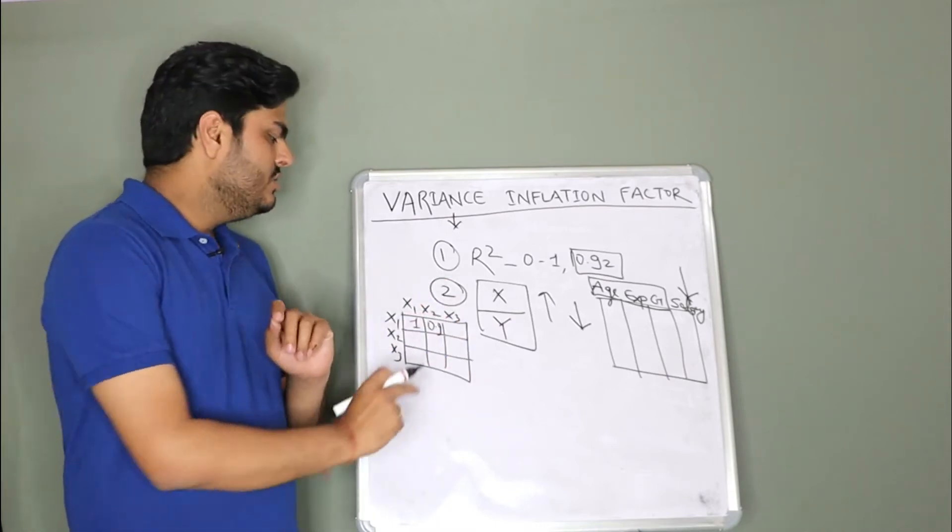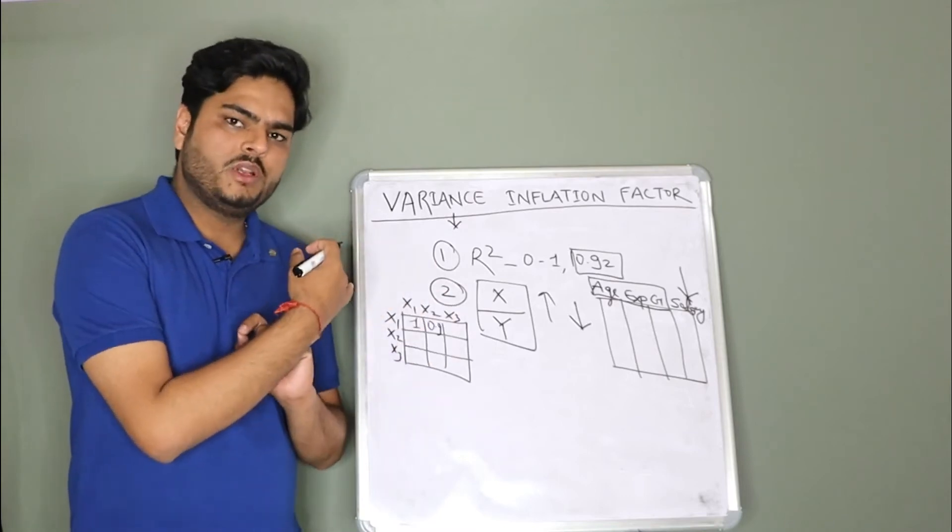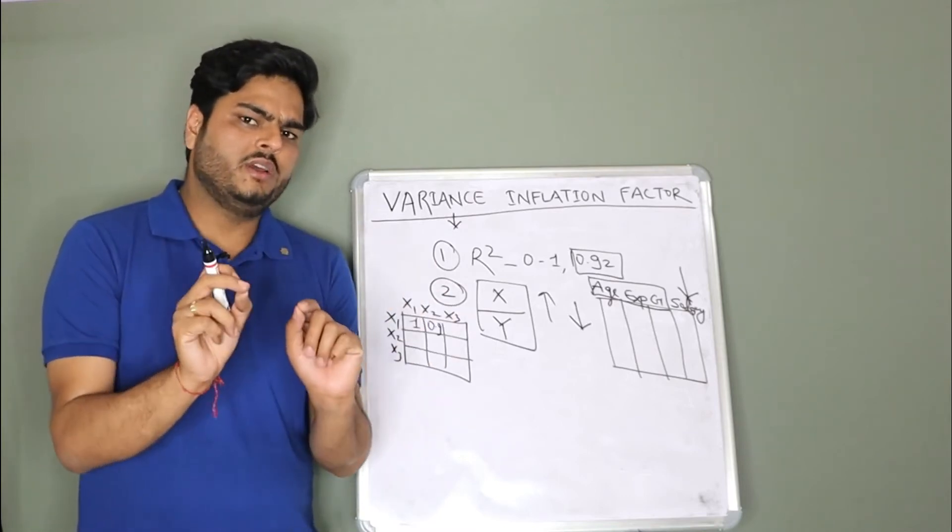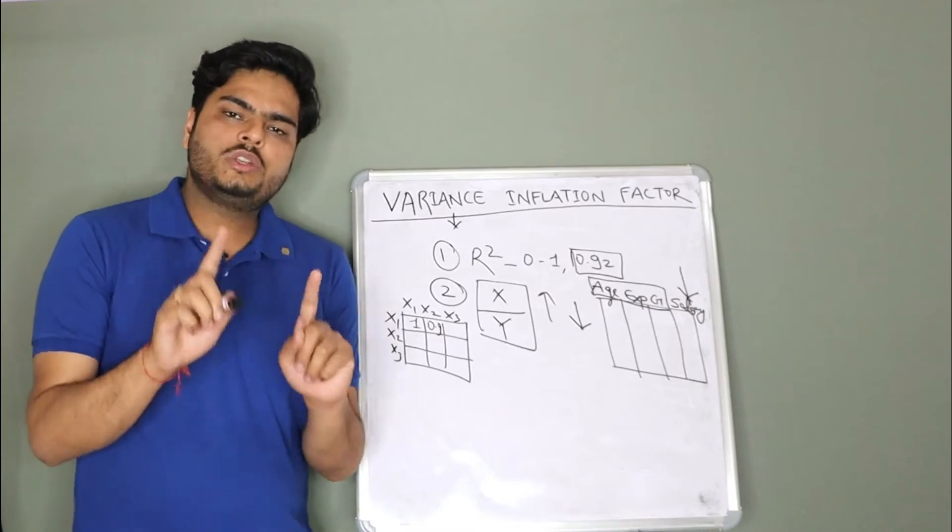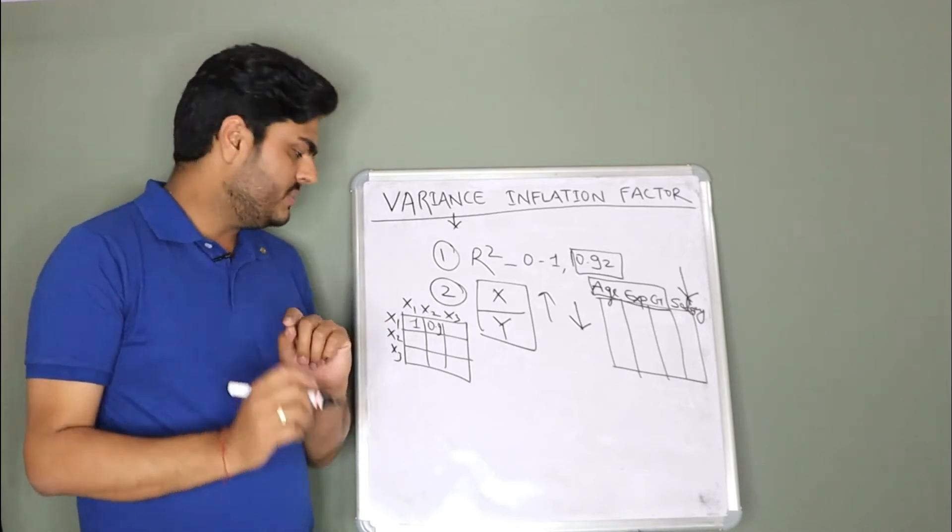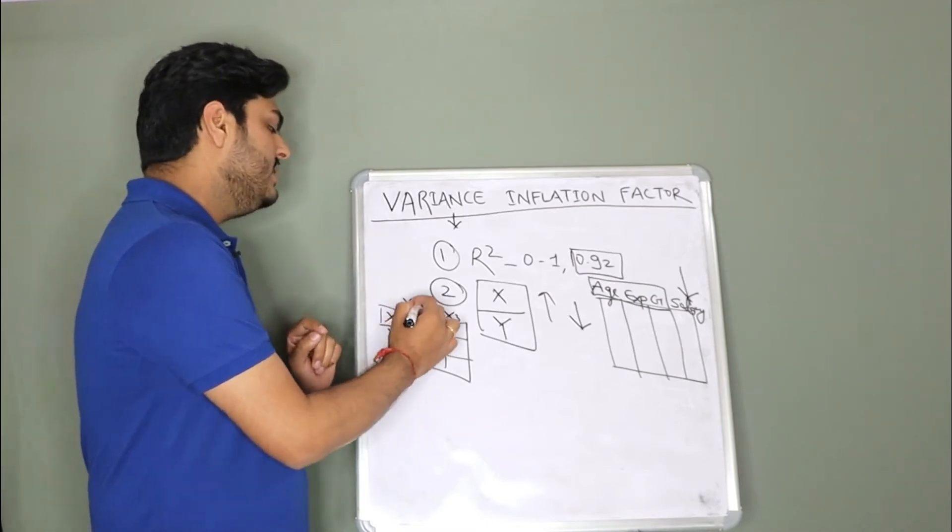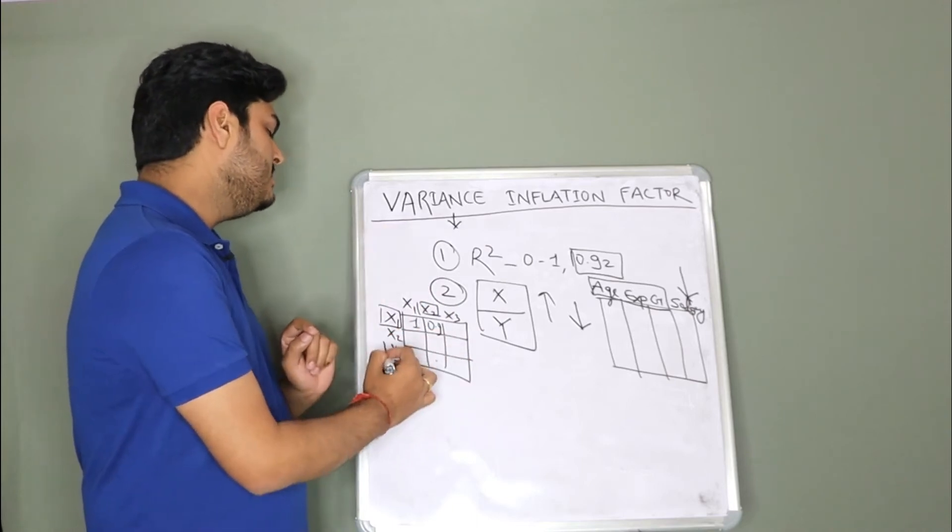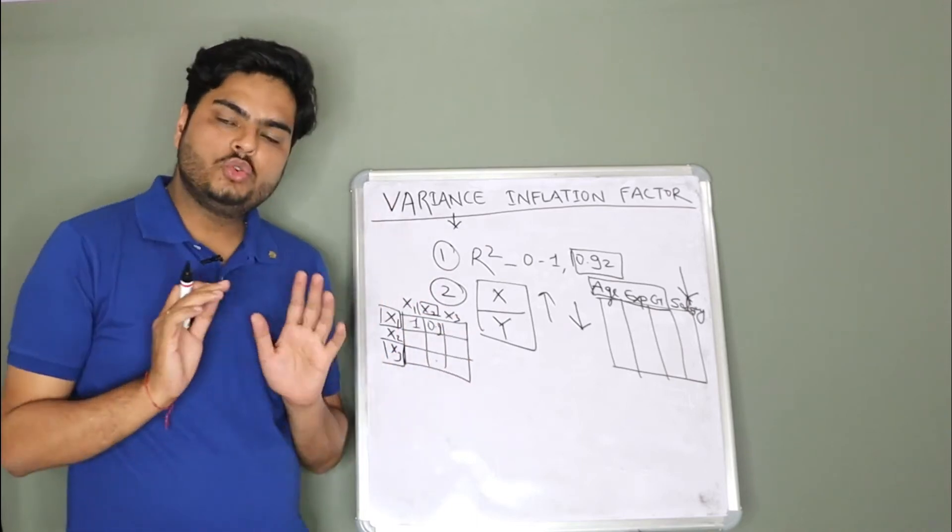What you do here? You see the higher numbers and remove the variable. But one thing to note here is, it is always correlation of one variable with other. For example, x1 with x2. If I see this box, this tells me x3 with x2.